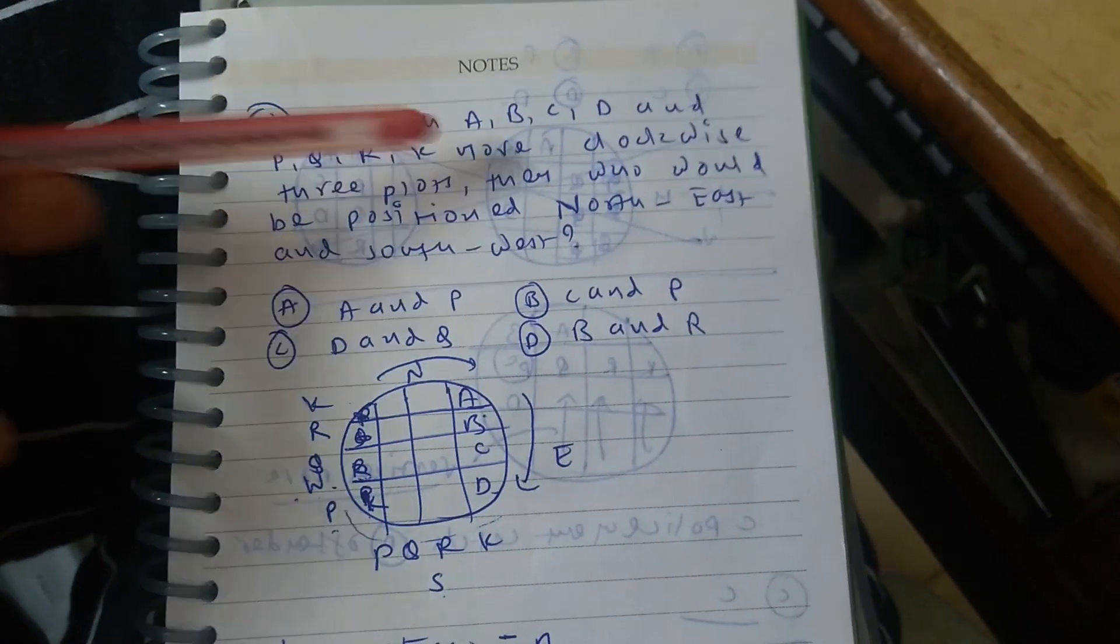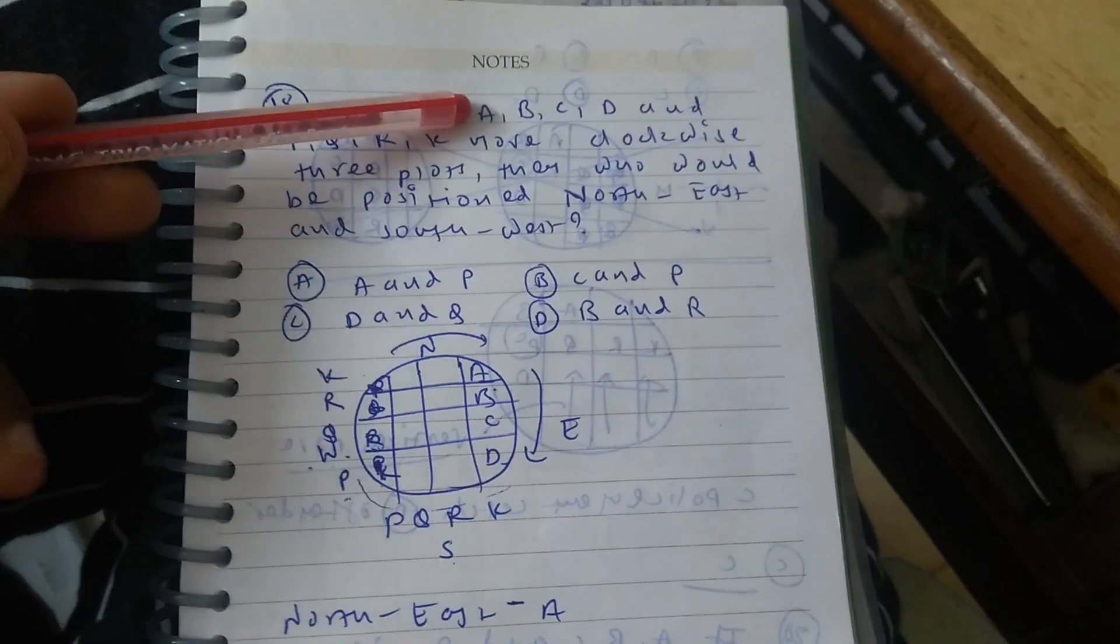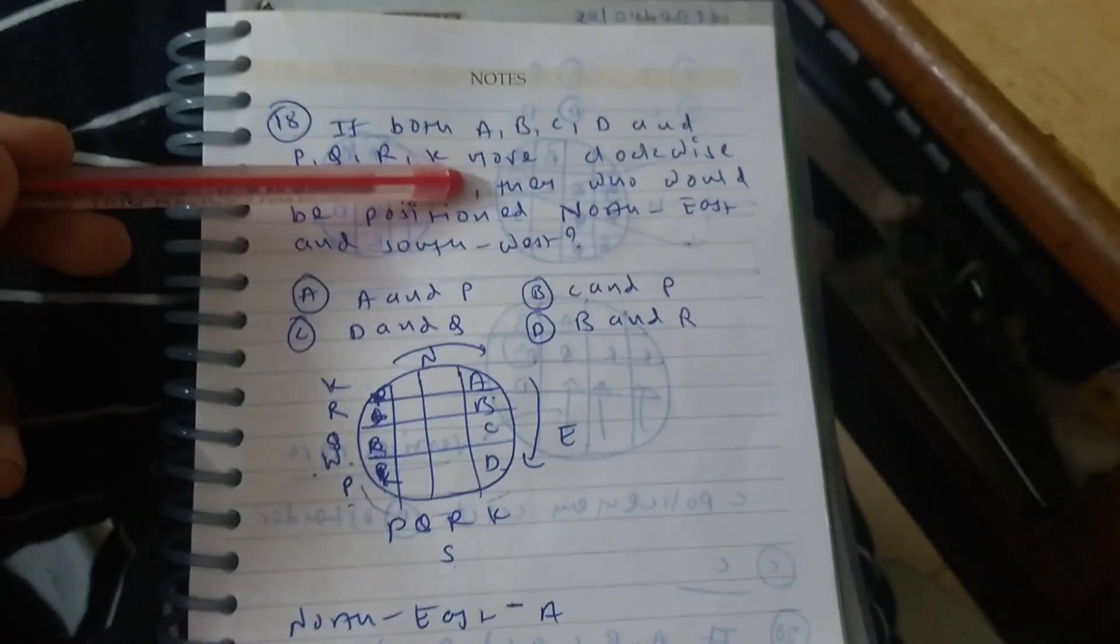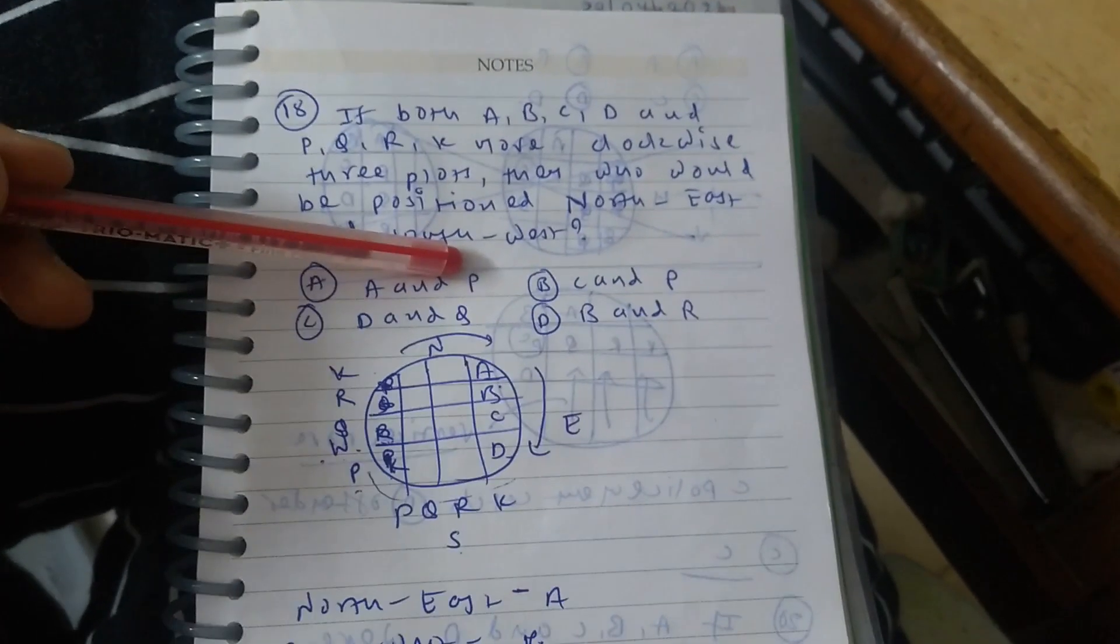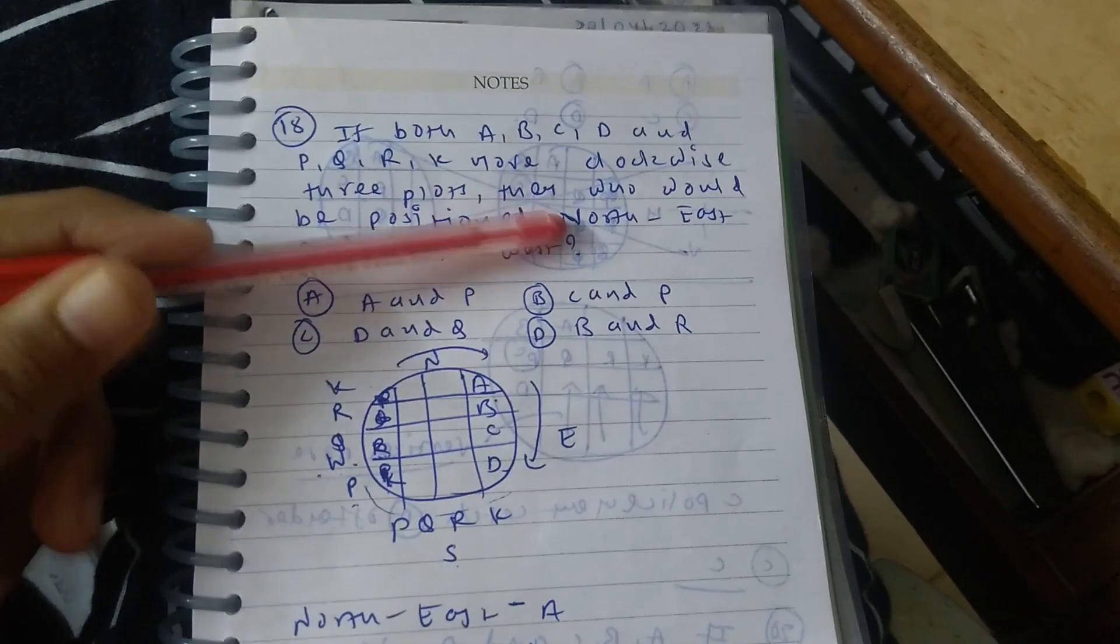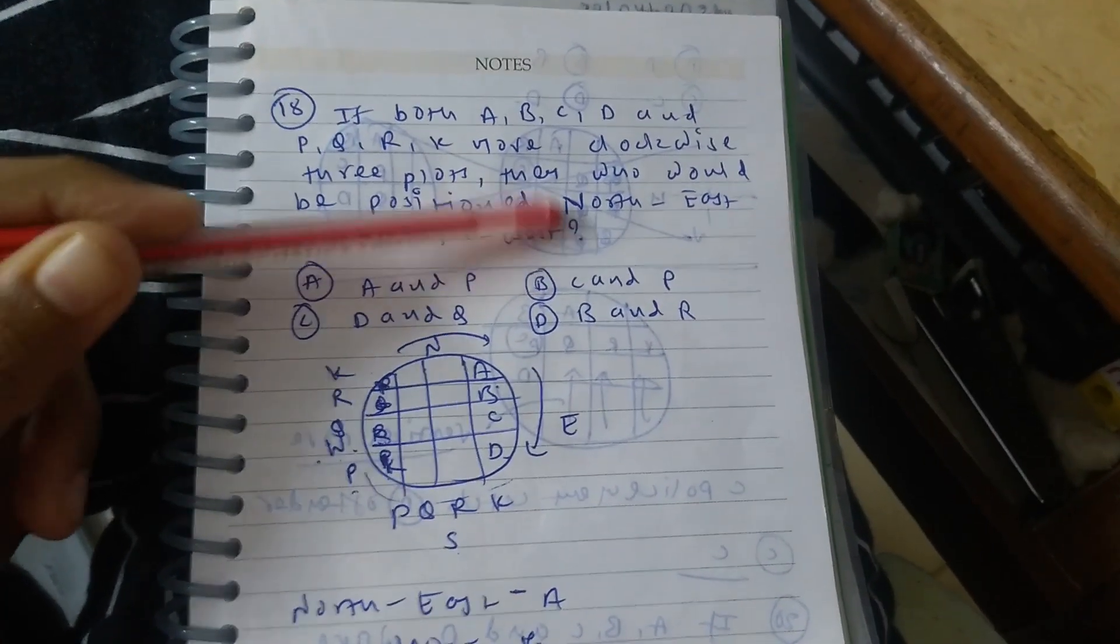If both A, B, C, D and P, Q, R, K, means both policemen and offenders, move in a clockwise direction by skipping three plots,